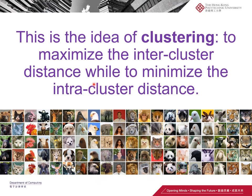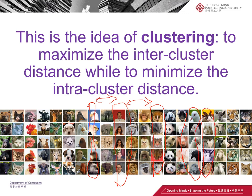Clustering is a process for grouping things. What we need is to maximize the inter-cluster distance — that means between the groups, you need to maximize the distance between those groups. And we need to minimize the intra-cluster distance. Intra-cluster means inside that cluster — those samples should have the minimum distance to each other, or the greatest similarity to each other.